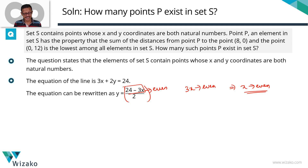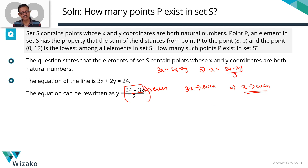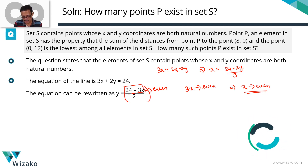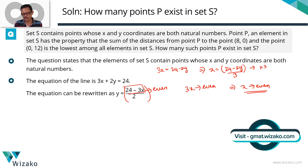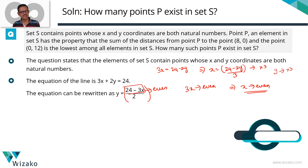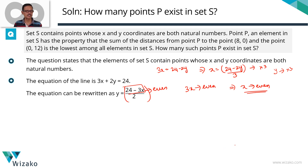There's one more deduction. Writing x in terms of y: 3x = 24 − 2y, so x = (24 − 2y) / 3. Since x must be an integer, (24 − 2y) must be divisible by 3. 24 is already a multiple of 3, so 2y must also be a multiple of 3. Since 2 is not a multiple of 3, y must be a multiple of 3. So we have two deductions: x is even, and y is a multiple of 3.